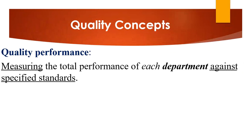Quality performance — the easiest way to remember this for exam questions is that each department must be looked at. We cannot say we are performing if only certain departments are doing well. All departments must be doing well. It is the measuring of the total performance of each department against specified standards. The keyword for exam purposes is 'each department.'